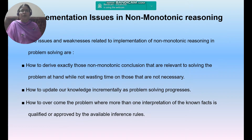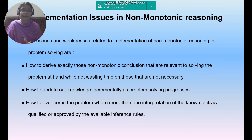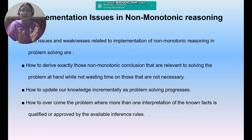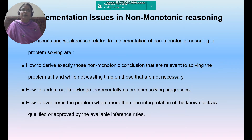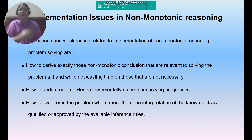Welcome to our channel Intelligible Tutorials. In today's session, I'm going to describe the implementation issues of non-monotonic reasoning. Monotonic means we have only one logical validity — either true or false — whereas in non-monotonic reasoning the value lies between true and false. Fuzzy logic, belief networks, and statistical reasoning are some solutions to handle such uncertain situations.